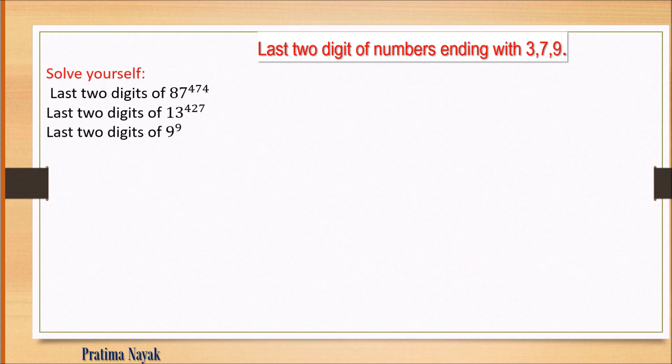Practice problems: find the last two digits of 87 to the power 474, 13 to the power 427, 7 to the power 9, and 9 to the power 9. Please mention in the comment section whether you are able to do these. Thank you.